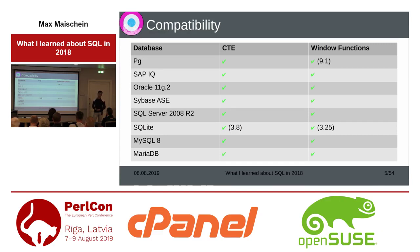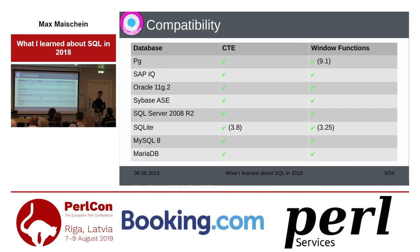If you are going to deploy on Android and want to use the included SQLite library, you need to be careful about common table expressions and ensure you have the correct version. Window functions are only in SQLite 3.25, and that is not deployed on Android at all, so you have to bring your own. And even MySQL 8 and MariaDB support common table expressions and window functions. So basically, if you are not using SQLite or if you are using a recent version, you can use this everywhere.